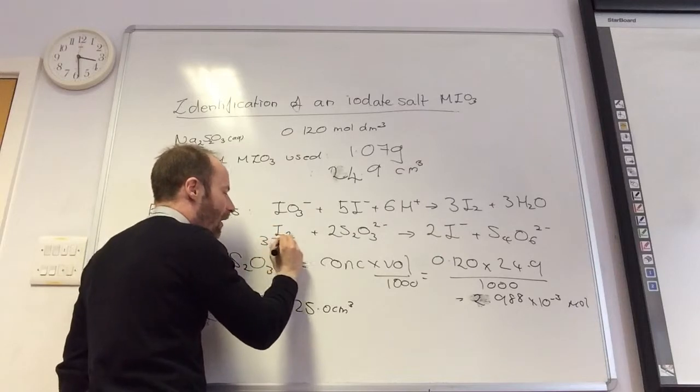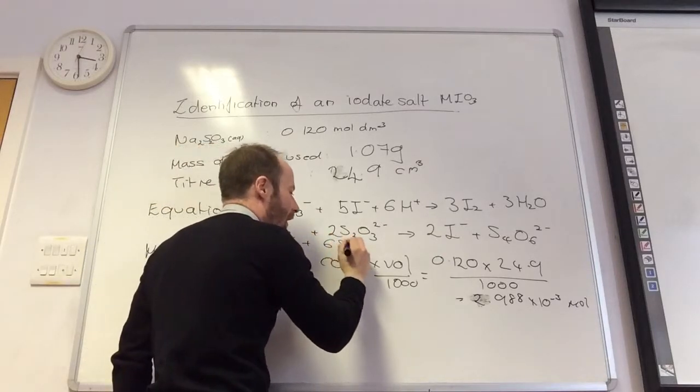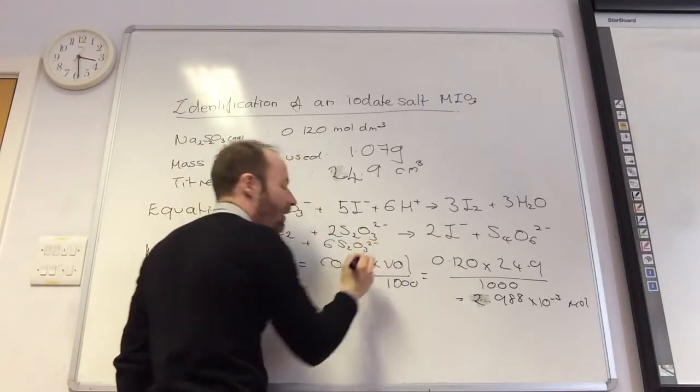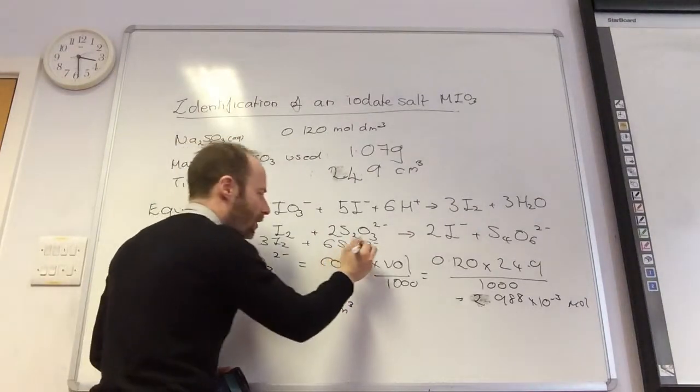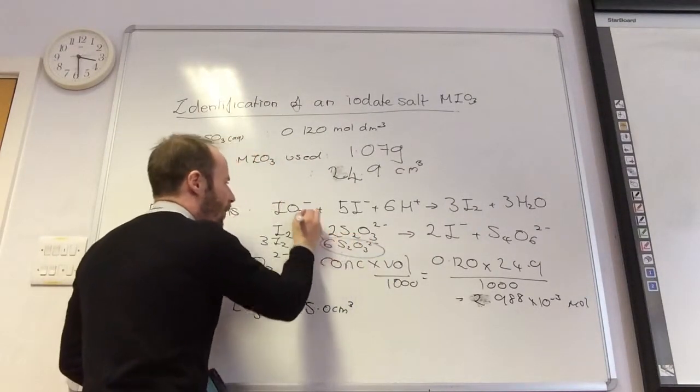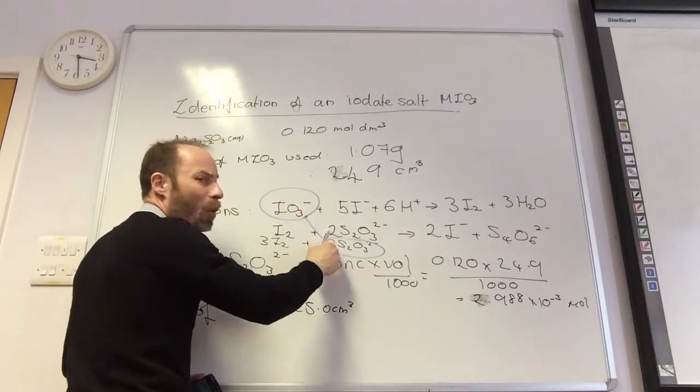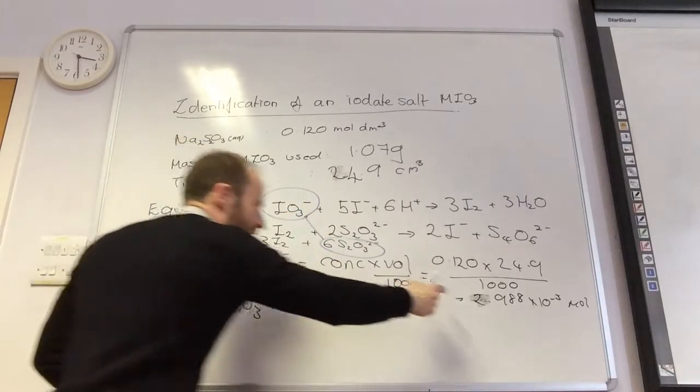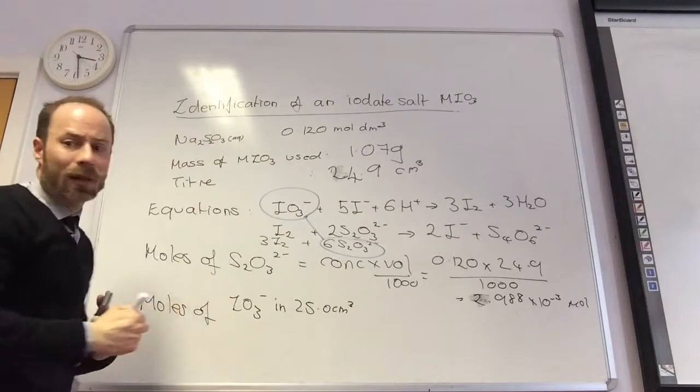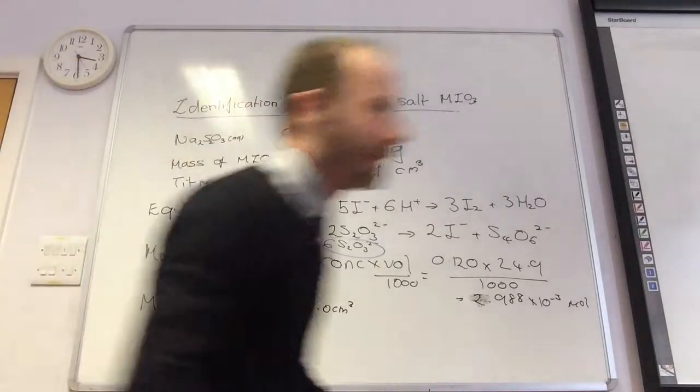So the ratio between what I found and what I want to work out - what is the ratio? One to six. So what do I need to do to that number? Divide by six.